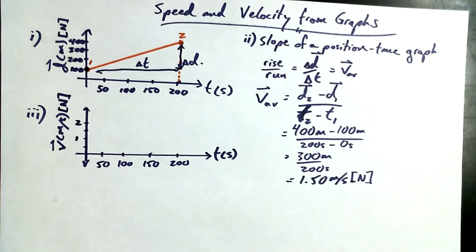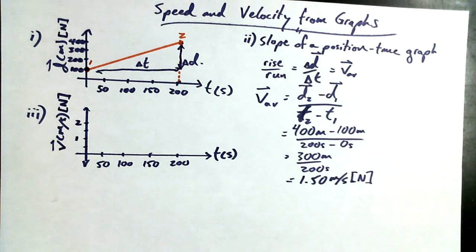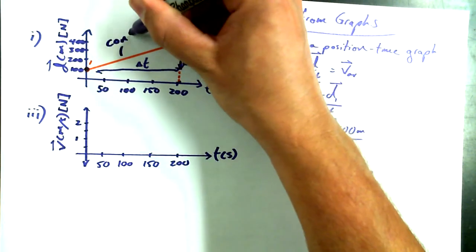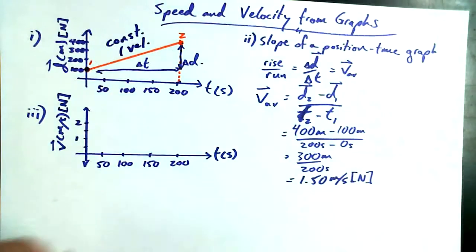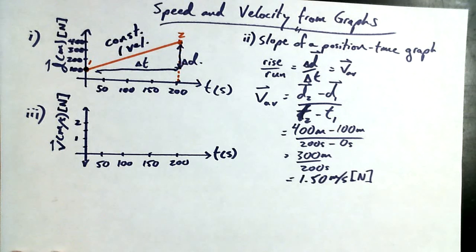I'd like this velocity time graph to be the velocity time graph that matches with the position time graph above it. So I've got to ask you really quickly, does the velocity between 0.1 and 0.2 on graph I change? In other words, does the slope change? If slope is the velocity on a position time graph, then what can you tell me about the velocity? Velocity is constant. It's a constant velocity. I'm even going to label this. Constant velocity. Some people will even call it uniform motion. It means that it's not accelerating.